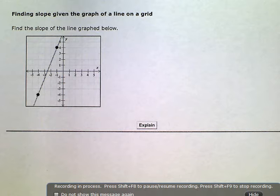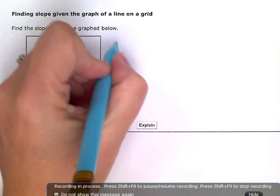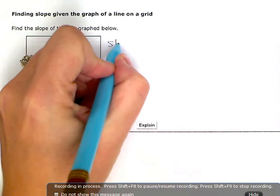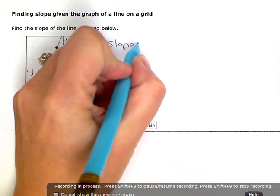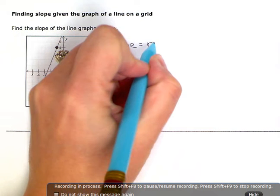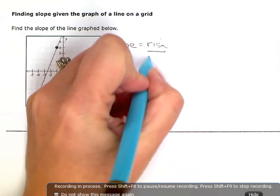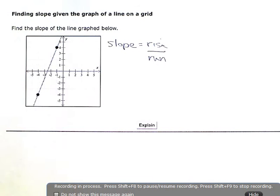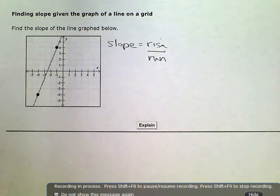to find slope, we're going to use the definition rise over run. So slope is rise over run. And slope is a measure of steepness.